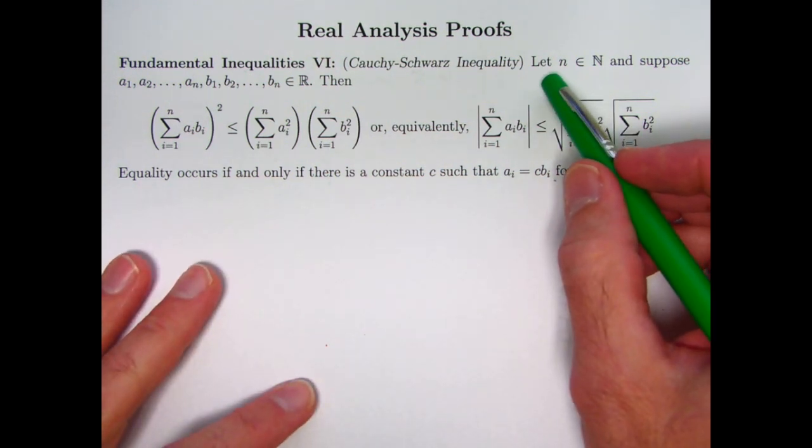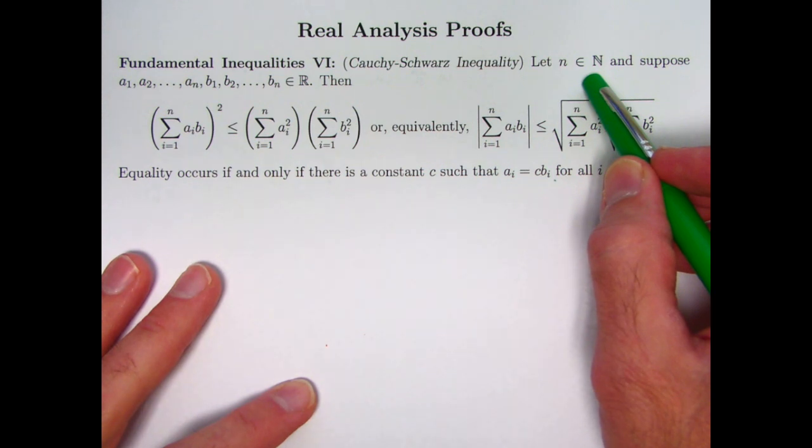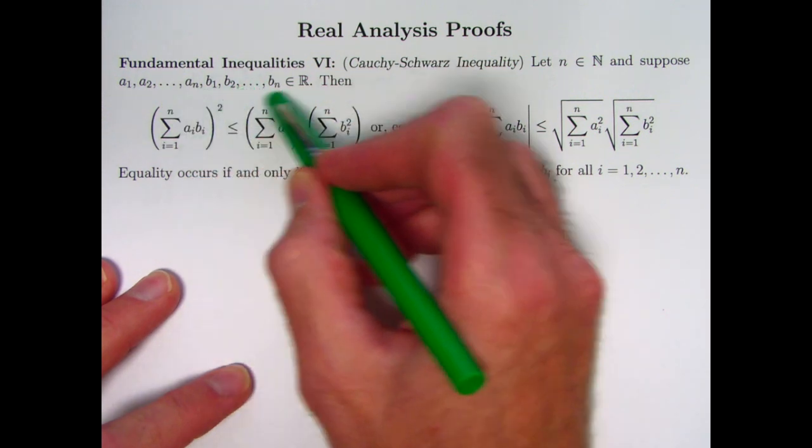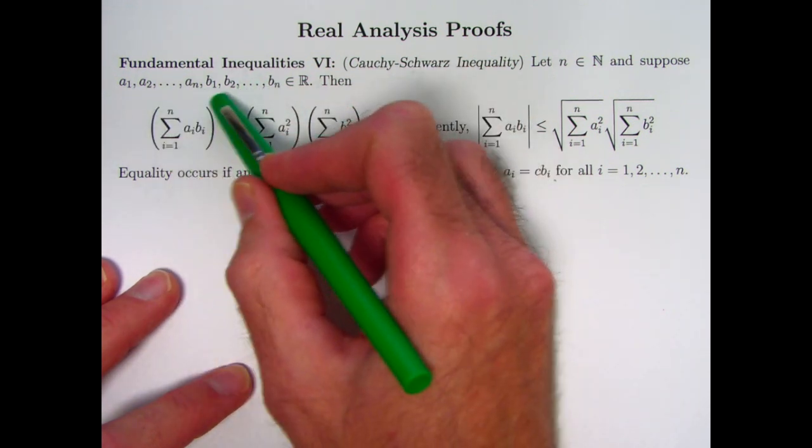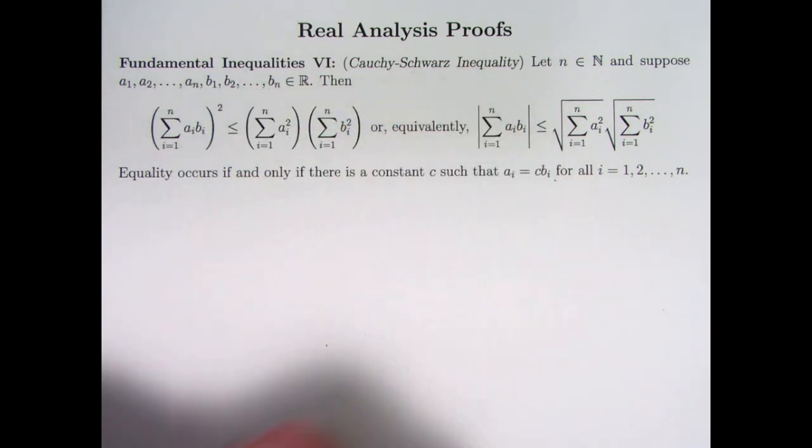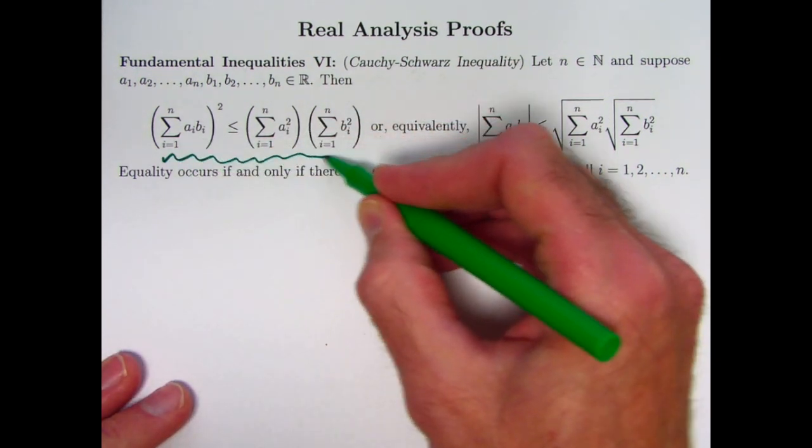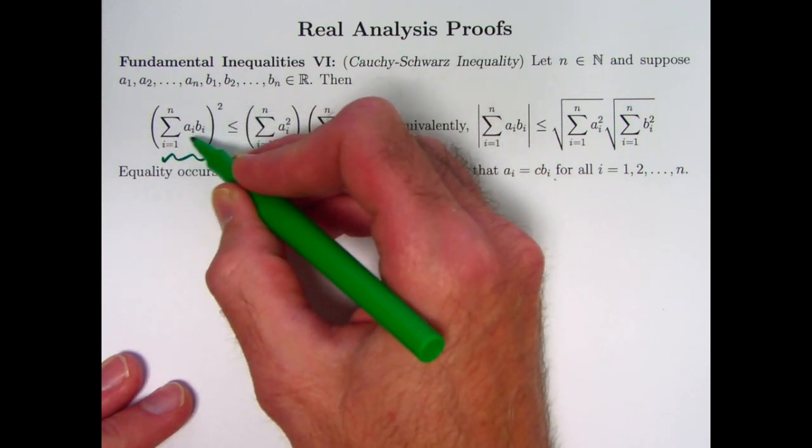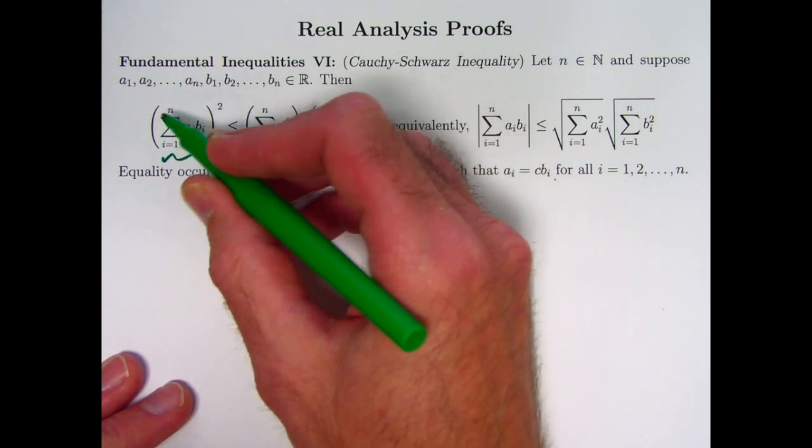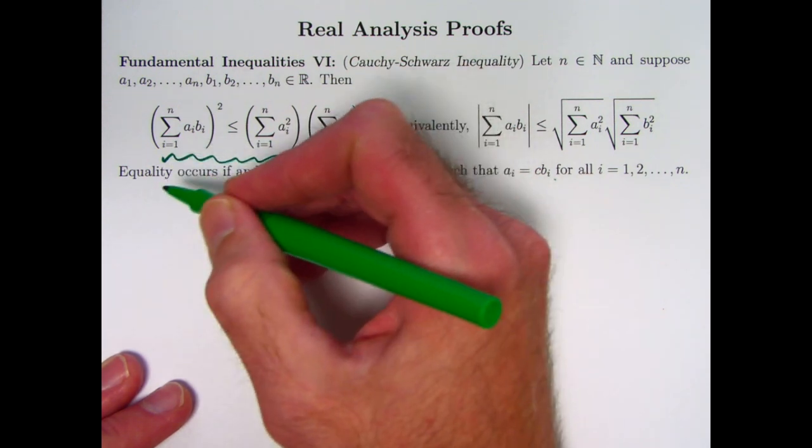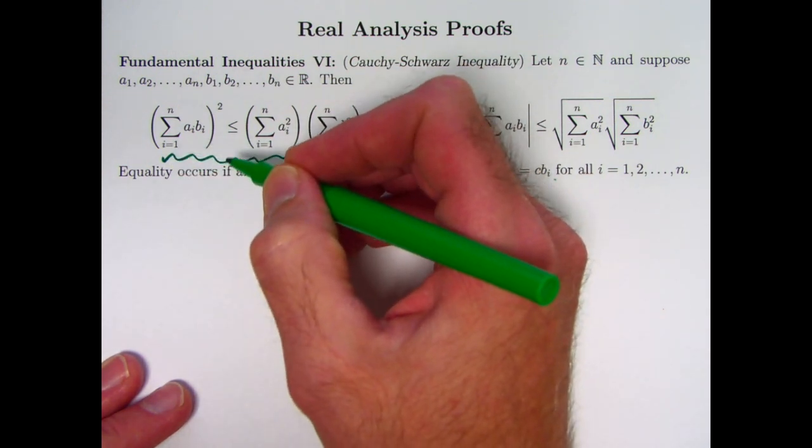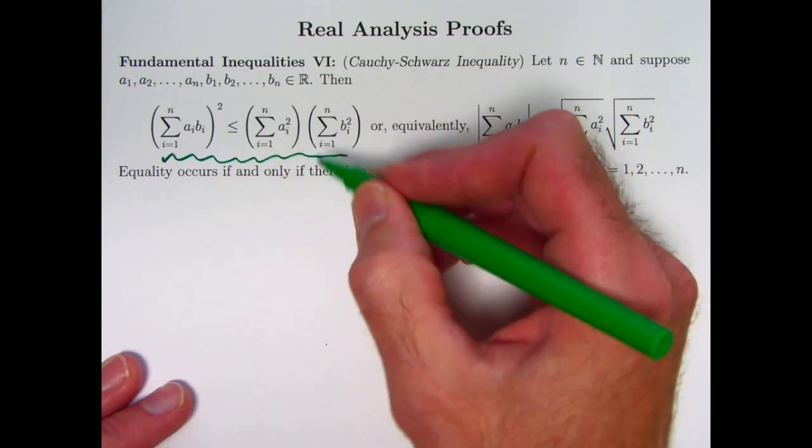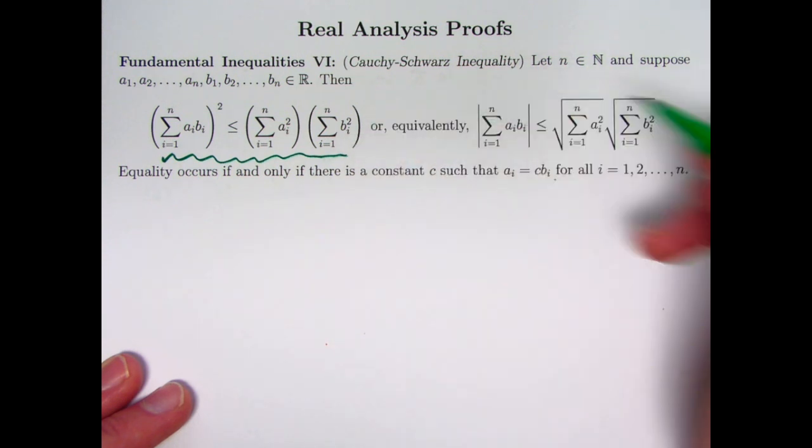All right, so the statement is: let n be a positive integer, a natural number one, two, three, four, five, six, etc., and suppose you've got two n real numbers a₁ through aₙ and b₁ through bₙ. The main statement of the inequality is what you see here: the square of the sum of the products of the corresponding a's and b's—a₁ times b₁ plus a₂ times b₂ plus a₃ times b₃, etc.—is less than or equal to the product of these two summations, the first of which is the sum of the aᵢ squareds and the second of which is the sum of the bᵢ squareds.